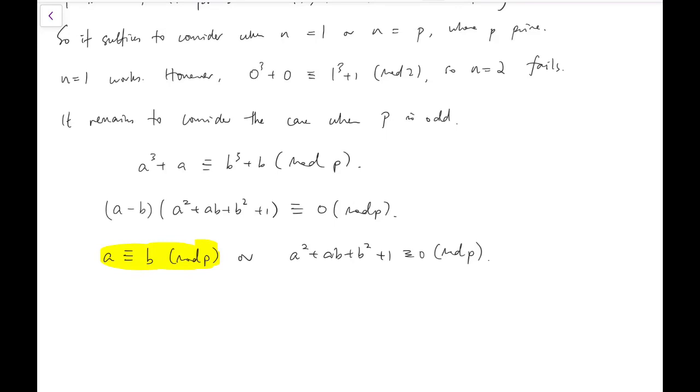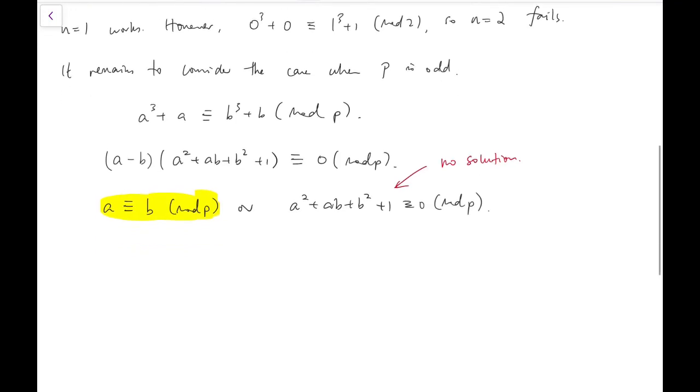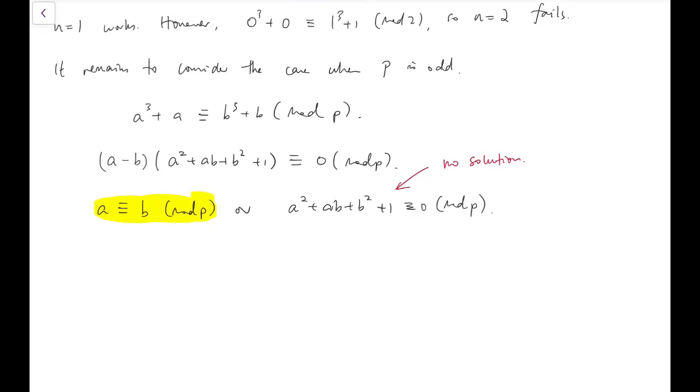So if we want to force a to be congruent to b mod p, then the idea is we want this to have no solution. Now, to further elaborate on this part, I will first complete the squares.